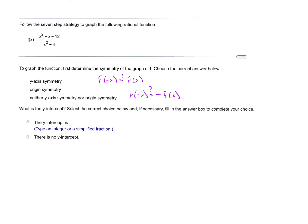So we just plug a negative x into our function. f of negative x: replace all the x's with a negative x and simplify. We get negative x squared is just positive x squared minus x minus 12 over x squared minus 4.